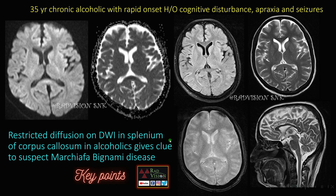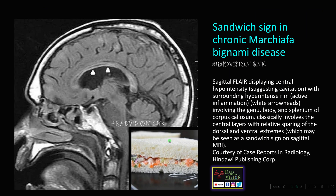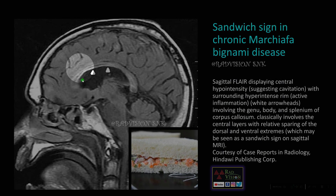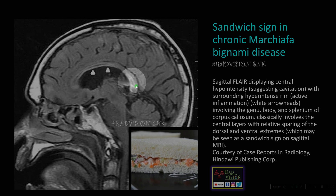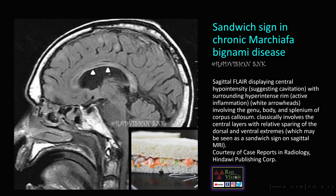Next: this is also a case of Marchiafava-Bignami disease but a chronic case. You can see there is cavitation and necrosis in the body and splenium of corpus callosum, but with sparing of the dorsal and ventral extremes. This gives the classical sandwich appearance. Remember the sandwich sign in chronic Marchiafava-Bignami disease.